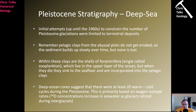The nice thing about Pleistocene geology is that because it's so recent, we can get information from lots of sources that we can't when we look at older rocks like the Permian. The initial attempts until the 1960s to constrain the number of glacial events were limited to terrestrial deposits — we had to look at the stuff we had on land. However, there is another source of information: the deep marine basins. In these very deep marine environments, we have the deposition of what's referred to as pelagic clays — a build-up of very fine material that accumulates very slowly and, most importantly, does not get eroded.